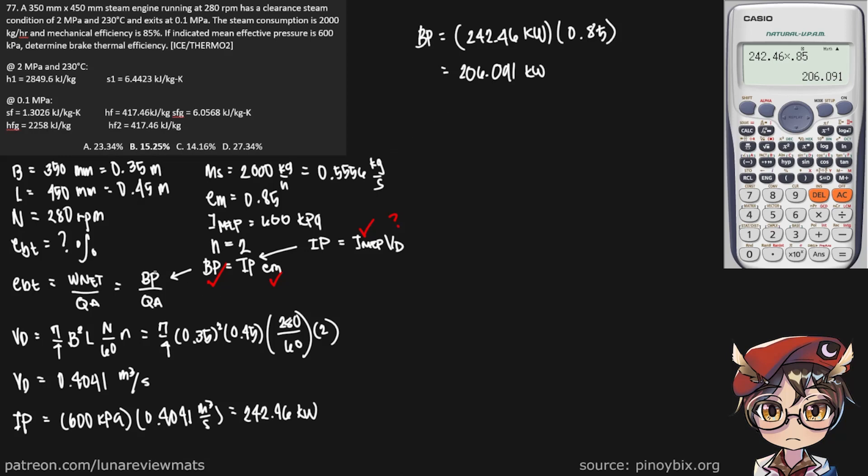And now we just need to find QA. We have the brake power, and since this is a steam engine, enthalpies will be involved. So this is just m_s multiplied by the difference in the enthalpies between the entrance and the exit. And we already have all of these in the givens as well.